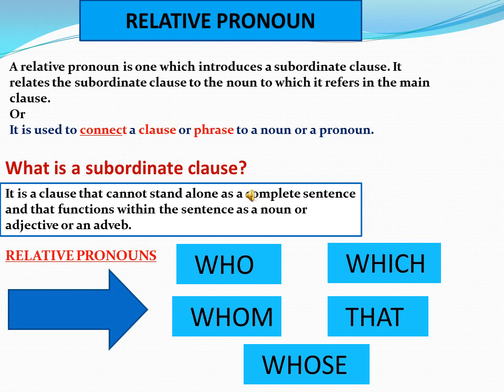You also need to know what a subordinate clause is. A subordinate clause is a clause that cannot stand alone as a complete sentence, and that functions within the sentence as a noun, adjective, or adverb. It connects to another sentence and depends on another sentence — it cannot stand alone. We will discuss this further in another lecture.